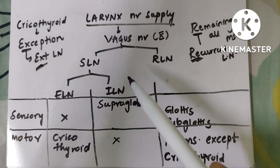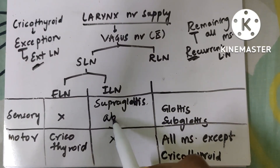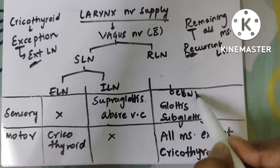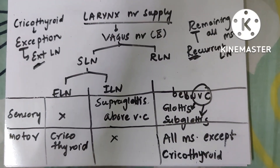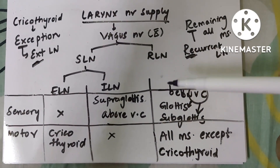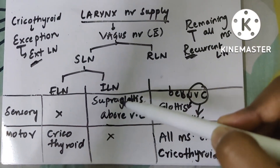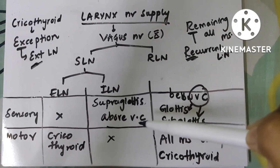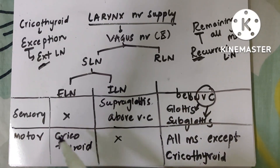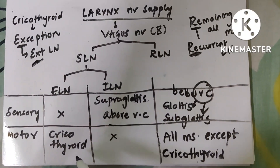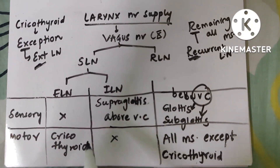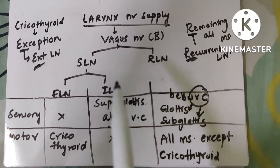For sensory supply: the internal laryngeal nerve supplies the supraglottis — above the vocal cords — whereas the recurrent laryngeal nerve supplies the glottis and below it, the subglottis. When there is injury to the SLN, including the ILN, sensation above the vocal cord is lost and the person is more prone to aspiration. When the cricothyroid muscle is lost, the pitch of the voice decreases.